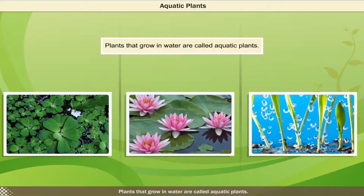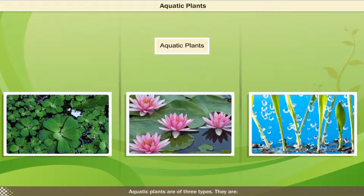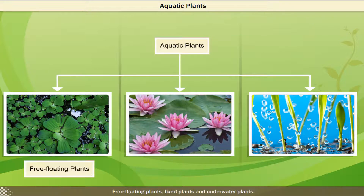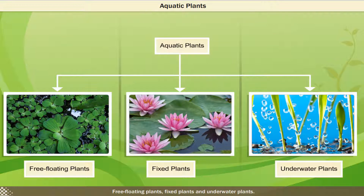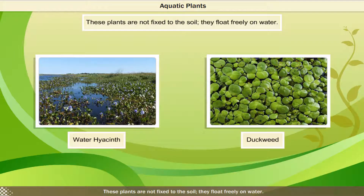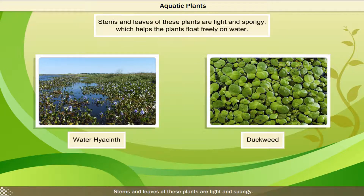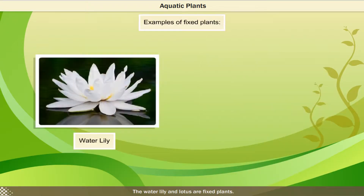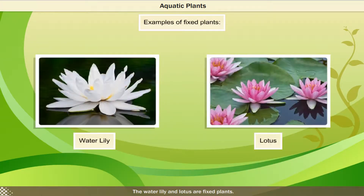Plants that grow in water are called aquatic plants. Aquatic plants are of three types: free-floating plants, fixed plants and underwater plants. The water hyacinth and duckweed are examples of free-floating plants. These plants are not fixed to the soil — they float freely on water. Their stems and leaves are light and spongy, which helps them float freely on water.